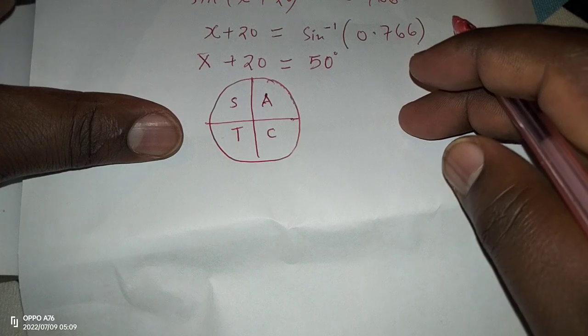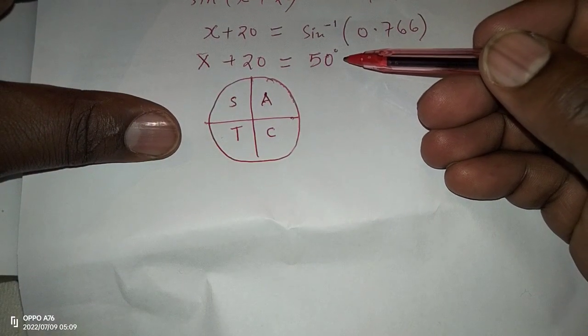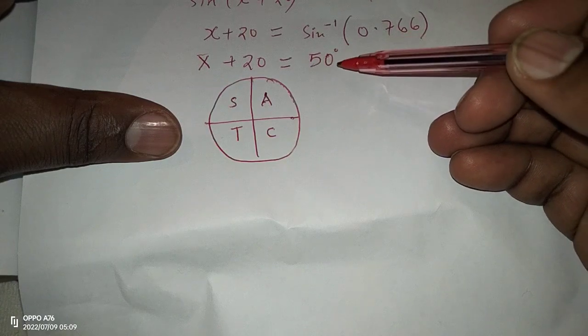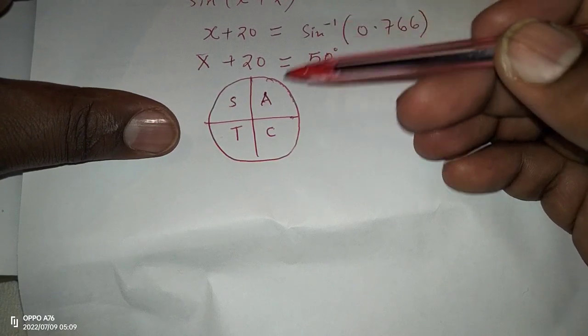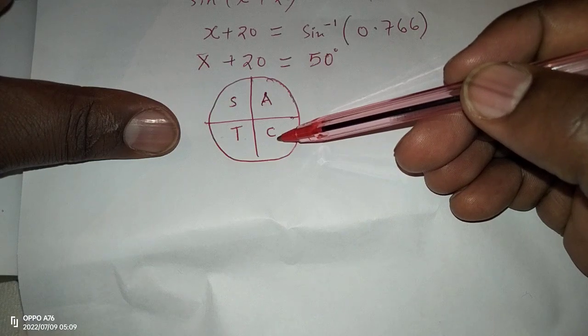Therefore, we are looking where signs are negative. So we have 50 degrees in the quadrants where sign is negative, and it is in the third and in the fourth quadrants, respectively.